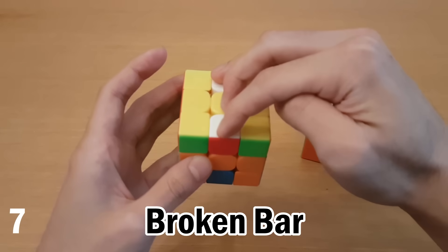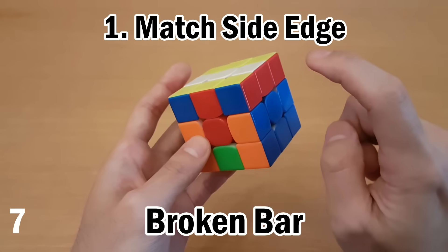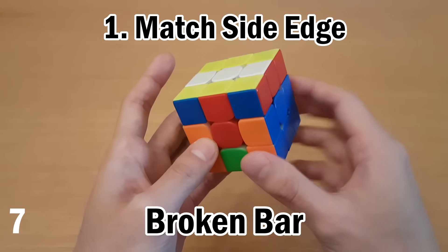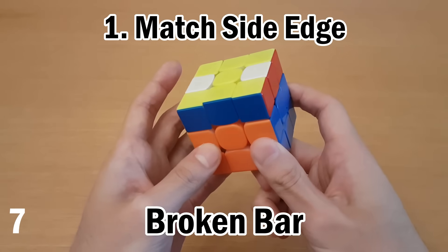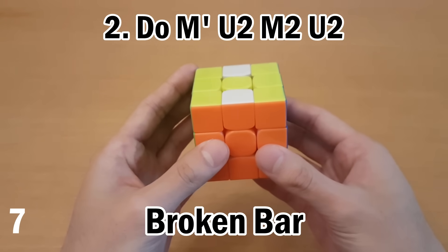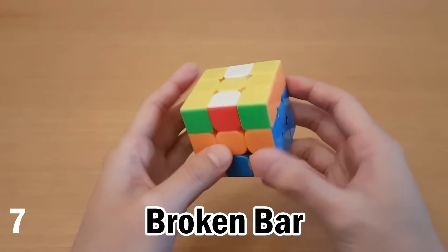So if you know you'll get a broken bar case, then what you do is you look at one of the side colors. So in this case, red, the red center is here. So I'm going to match them afterwards. So M2 and then match it. Next, always do M' U2, M2 U2. And then one more move.